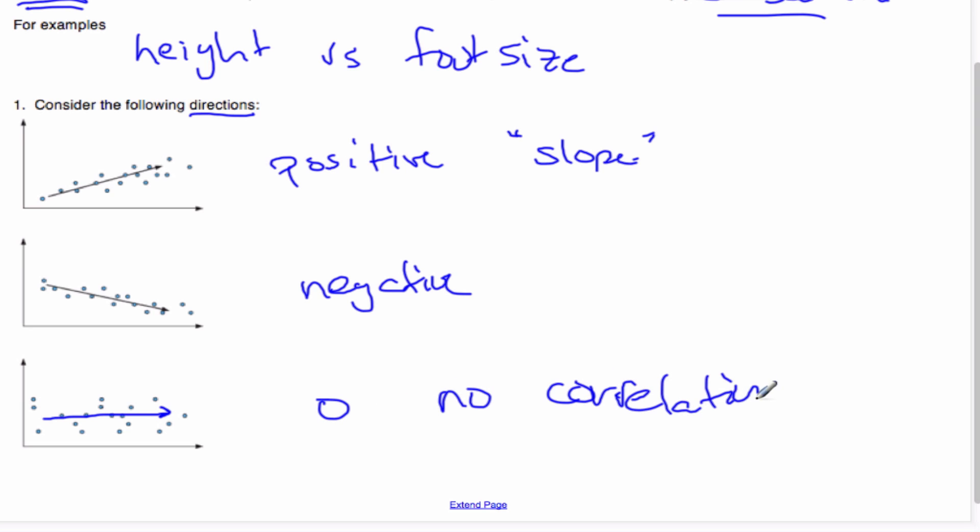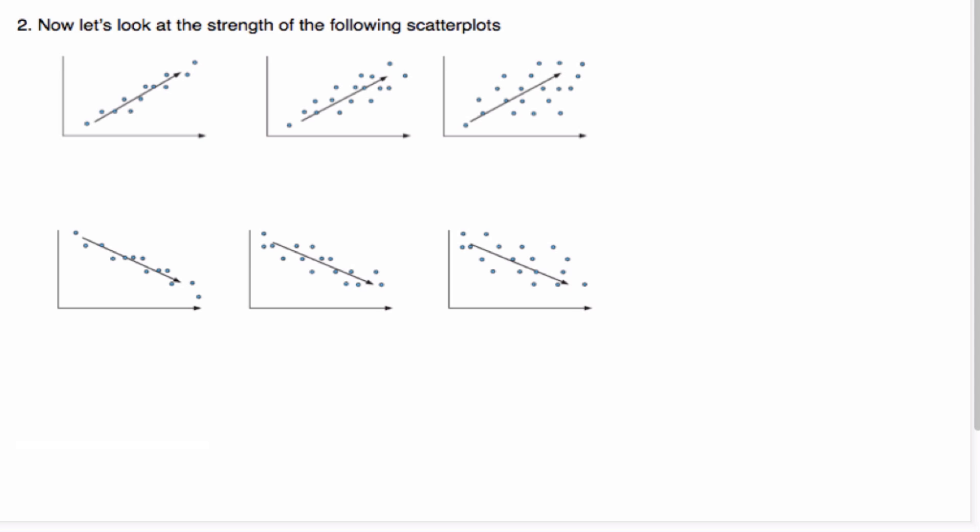Yeah, no correlation, or no relationship would just be another word. Between the two variables. So this is the direction. There's three ways to describe these scatter plots. Direction is one of them. Let's look at another one now. Now we're going to look at the strength of these scatter plots.